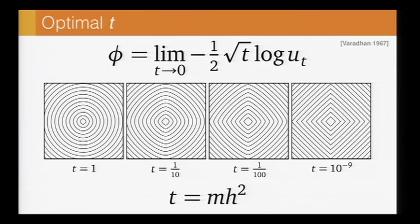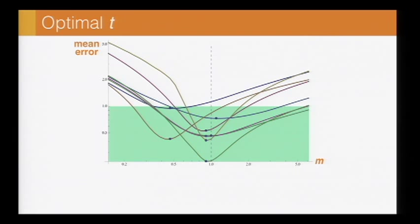By simple scaling arguments, you know that t should have the form mh squared, where m is a constant, and h is the average spacing between nodes, so maybe the average edge length in your mesh. And by doing some more analysis on this regular grid, and also looking empirically at a bunch of examples, what you find is that by setting this constant to one, you very often get something very close to optimal.